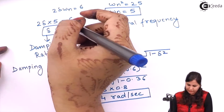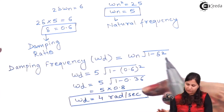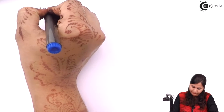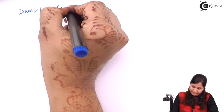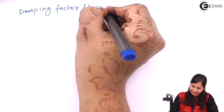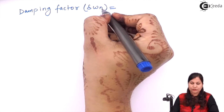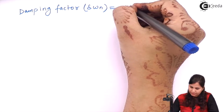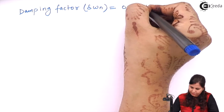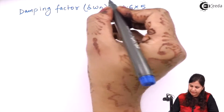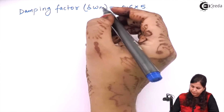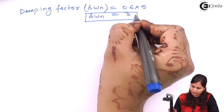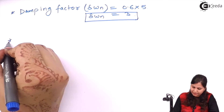We have the damping ratio δ = 0.6. Now we calculate the damping factor, which is given by δ × ωn. Substituting δ = 0.6 and ωn = 5, the damping factor equals 3. The next transient response specification is maximum overshoot.